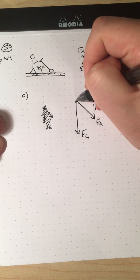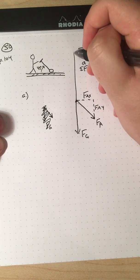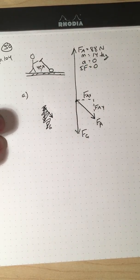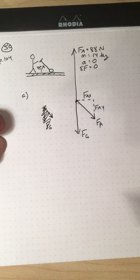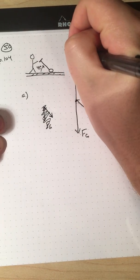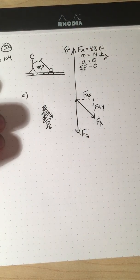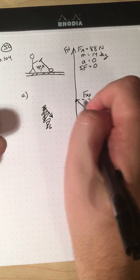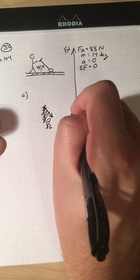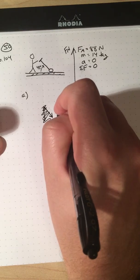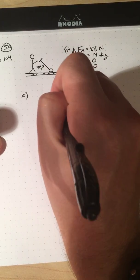And the normal is going to have to cancel out both the force of gravity and the y component. So it's got to be, if I draw this to scale, it's going to be a little bit bigger here, right, because it should be the length of the force of gravity plus the length of F_A_Y. And that's my normal force.